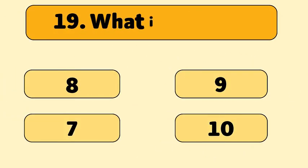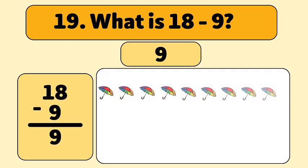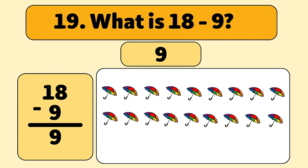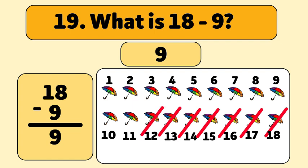What is 18 minus 9? The answer is 9. We start with 18 umbrellas and take away 9. Let's count: 1, 2, 3, 4, 5, 6, 7, 8, 9. We have 9 umbrellas now.